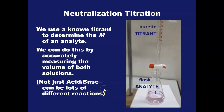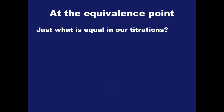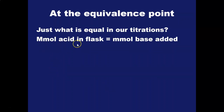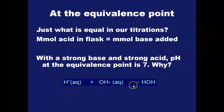The first thing we have to think about is what we're looking for in a titration: the equivalence point. In our case, we'll have an unknown acid in the flask and we'll add a base to it. At the equivalence point, the millimoles of acid in the flask equal the millimoles of base added, because we have a monoprotic acid and a monobasic base. With a strong base and strong acid, the pH at the equivalence point is 7, because the net ionic equation gives us H⁺ + OH⁻ → water, a neutral compound with pH 7.